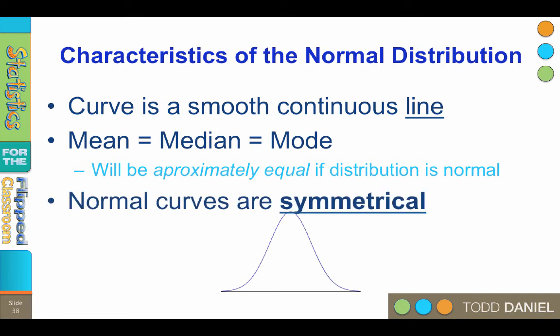Normal curves are symmetrical, which means that they are divided right down the middle. The left half and the right half look the same. If I print a normal curve on a piece of paper, and then fold that paper right down the middle, the left and right halves of the normal curve will match perfectly.